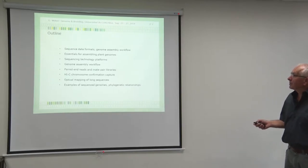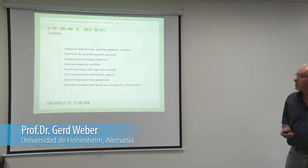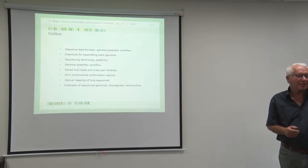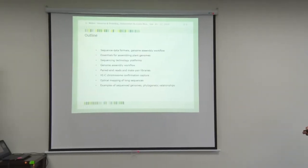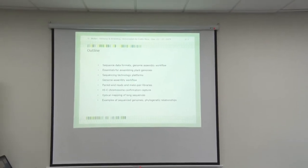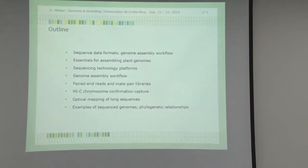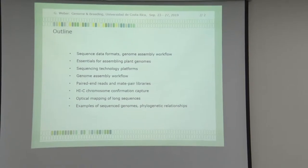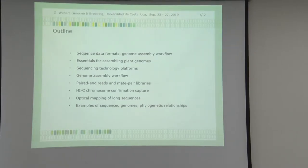We have to look at some of the essentials for assembling prime genomes, and here again the sequencing platforms are very much related to what you can do with the data in terms of assembly. Then we look at the genome assembly workflow — what has to come first, second — and then we look at paired-end reads and mate-pair libraries in conjunction with genome assembly. Then we look at Hi-C chromosome conformation capture and finally optical mapping of long sequence reads.